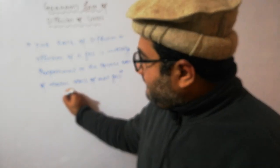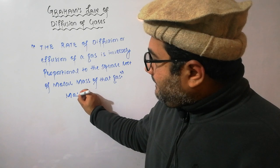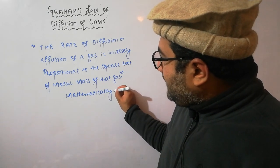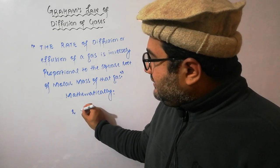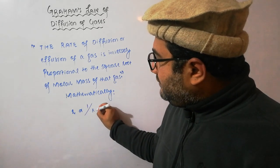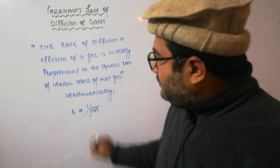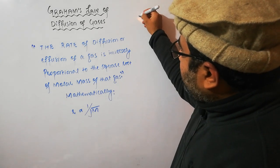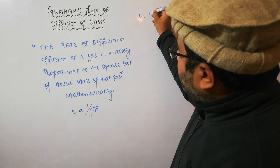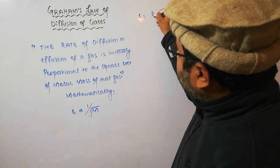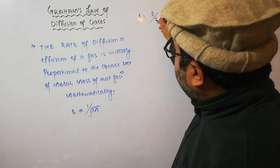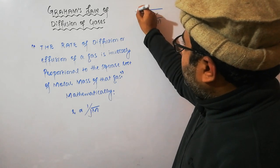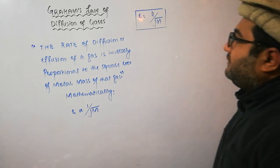Mathematically, it can be written as: the rate of diffusion of a gas is inversely proportional to the square root of its molar mass. Replacing the sign of proportionality with equality, it becomes R = k / √M, where M is the molar mass of the gas. This is the mathematical form of Graham's Law of diffusion.